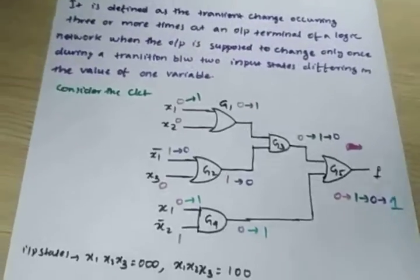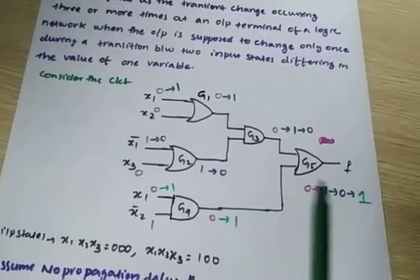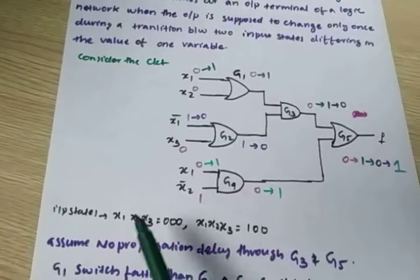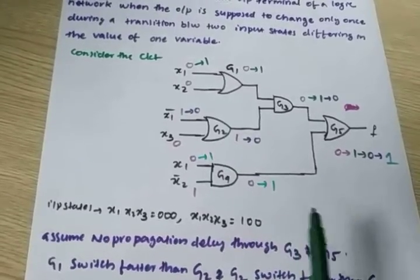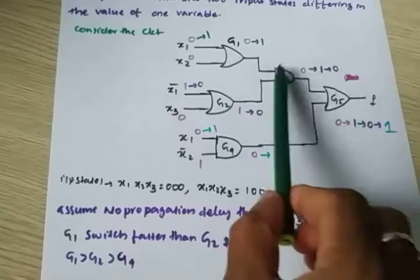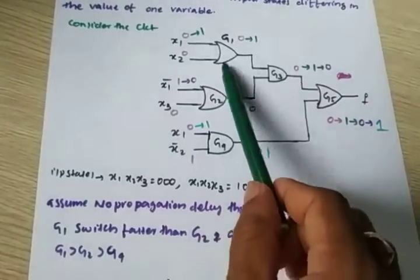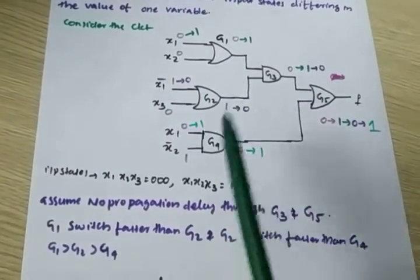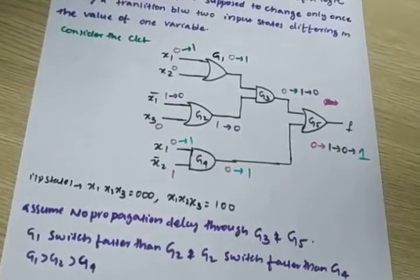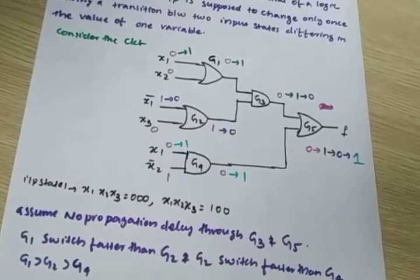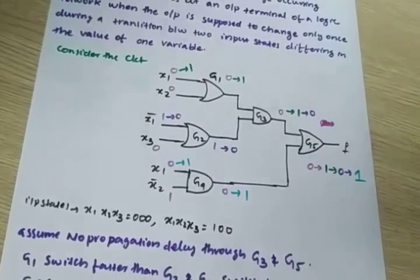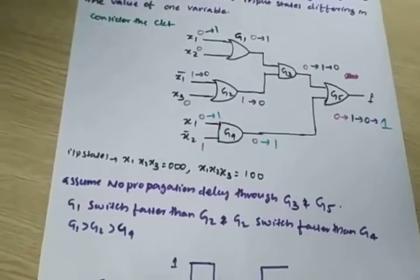Let's see with an example. This circuit has gates g1, g2, g3, g4, and g5 with inputs x1, x2, x3. Assume no propagation delay through g3 and g5. G1 switches faster than g2, and g2 switches faster than g4. So g1 is the fastest, g2 is a bit slower, and g4 is the slowest with the most propagation delay.